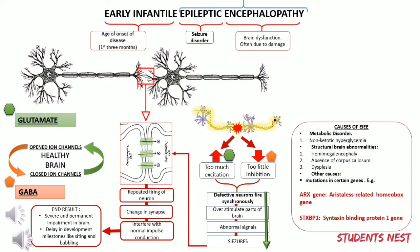The most common causes of EIEE include structural brain abnormalities like hemimegalencephaly, where one half of the brain is larger than the other; absence of the corpus callosum, which is a large fiber bundle connecting the left and right hemispheres; and dysplasia, an abnormal development of the cerebral cortex. Other causes include metabolic disorders like non-ketotic hyperglycemia and mutations in genes coding for normal development of neurons.